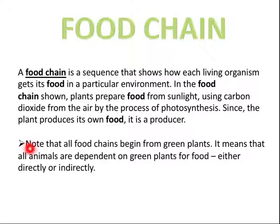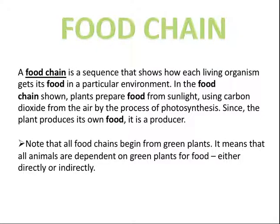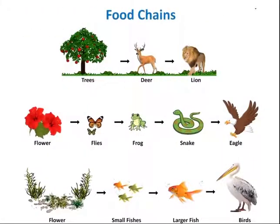All food chains begin from green plants, which means all animals are dependent on green plants for food either directly or indirectly. A food chain shows how each living thing gets its food in a particular environment. Here are some pictures of food chains — a tree is eaten by a deer, and the deer is eaten by a lion.